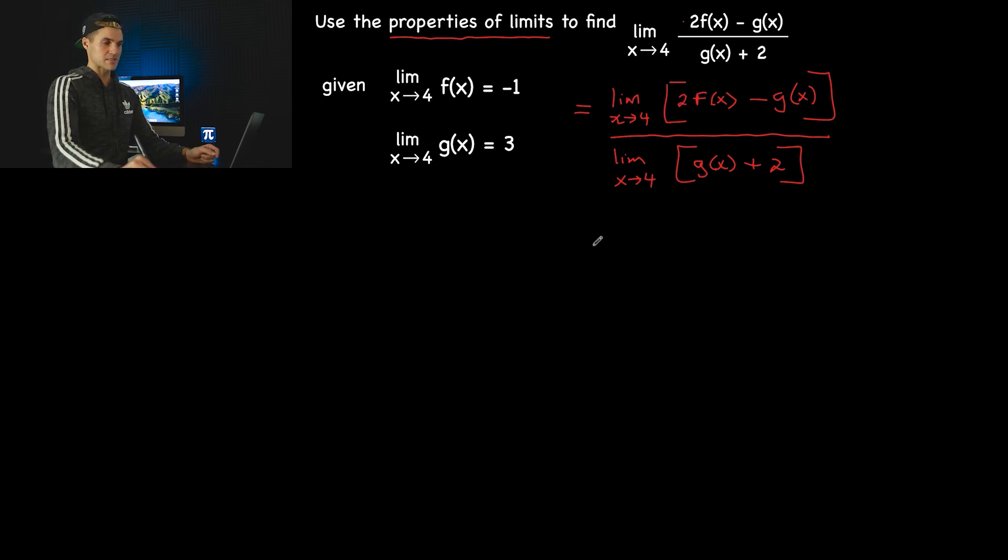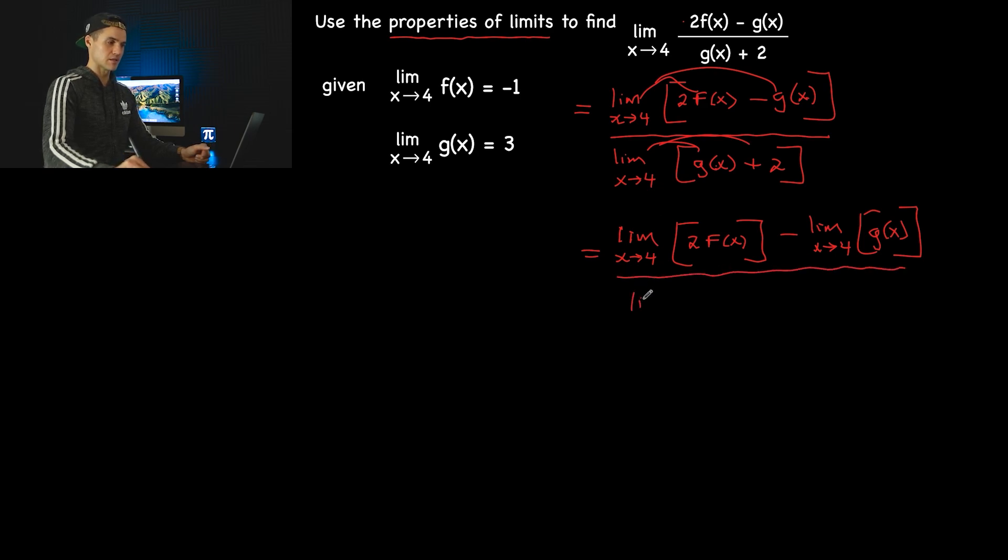And then we look at these two limits separately. Notice that here we have two expressions that are subtracting, here two expressions that are adding, and so we use the sum and difference rule of limits where we can basically take this limit, almost like distributing it in the bracket. So it's like the limit as x approaches 4 of 2f(x) minus the limit as x approaches 4 of g(x). So just separating the two limits there, and then this is going to be all over the limit as x approaches 4 of this constant 2.